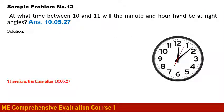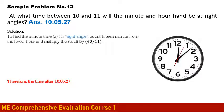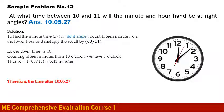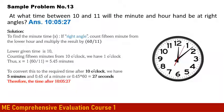Sample Clock Problem 3: At what time between 10 and 11 o'clock will the minute and hour hand be at right angles? Count 15 minutes from 10 o'clock — that gives 1 o'clock. Multiply 1 by 60/11 = 5.45 minutes, which converts to 5 minutes and 27 seconds. Therefore the hands are at right angles at 10 o'clock, 5 minutes, and 27 seconds.